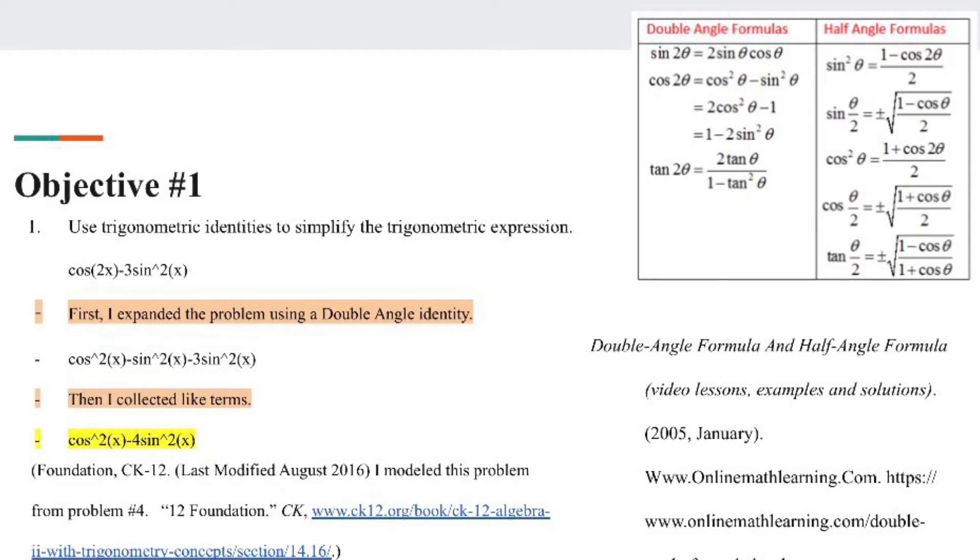The problem is cosine 2x minus 3 sine squared x. First, I expanded the problem using a double angle identity from the chart on the right from onlinemathlearning.com. This gives cosine squared x minus sine squared x minus 3 sine squared x. Then I collected like terms, which gives cosine squared x minus 4 sine squared x. That is my answer.